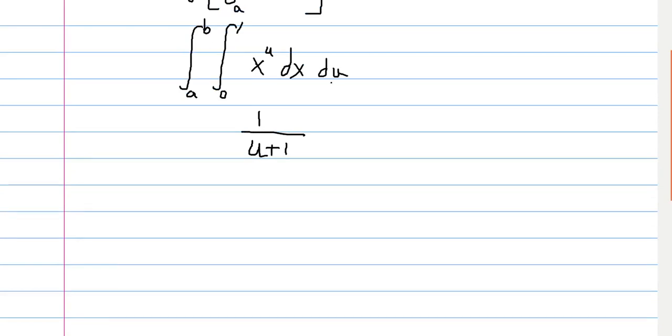And now we have the integral from a to b of one over u plus one du, and this is just a simple derivative of a logarithm function. Specifically, this is the derivative of the natural log of u plus one. And so once we evaluate, our final answer is the natural log of b plus one divided by a plus one.